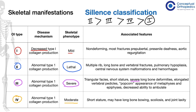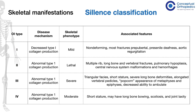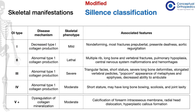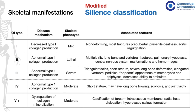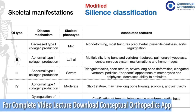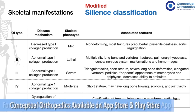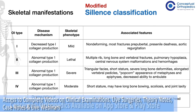This classification has been further modified by different authors based on the type of genes involved in the different types of osteogenesis imperfecta. We have type 5, 6, 7, 8, and so on, depending on the genes involved. All these types have a dysregulation of collagen mineralization and a moderate skeletal phenotype.